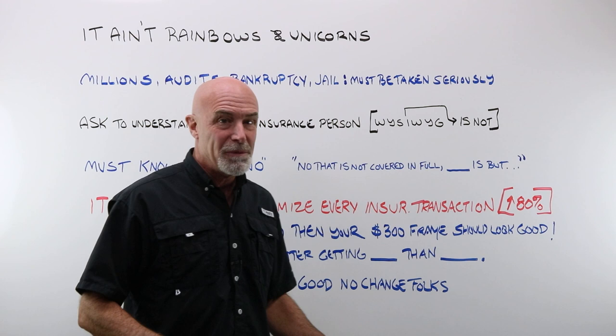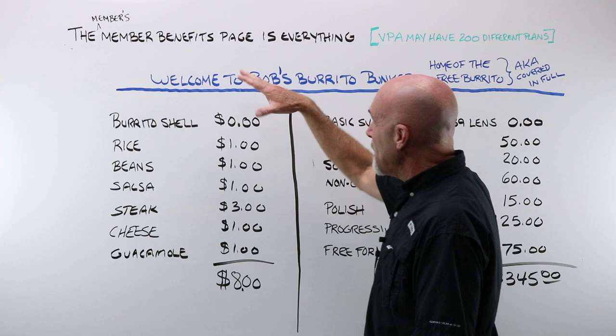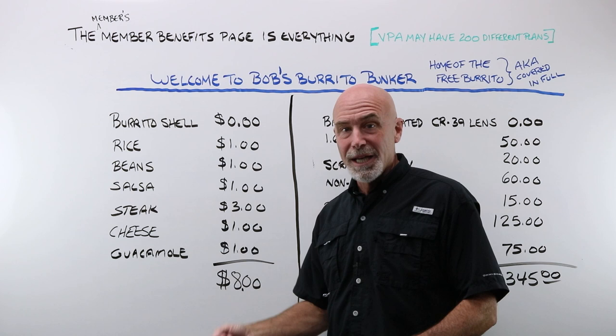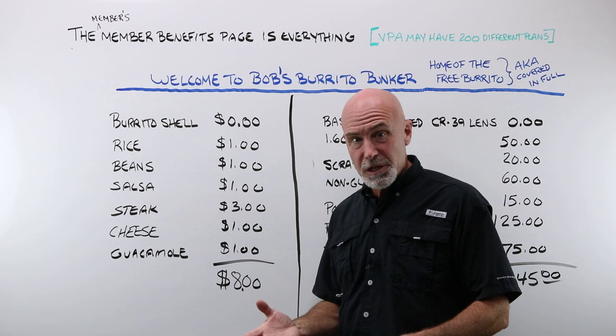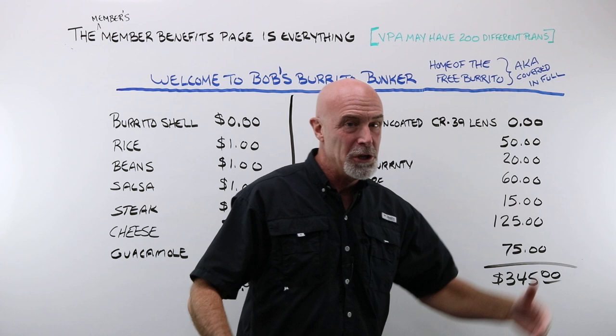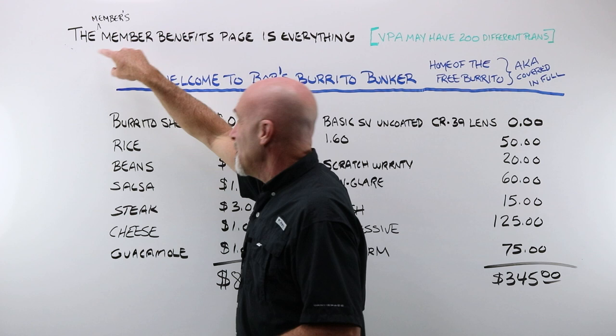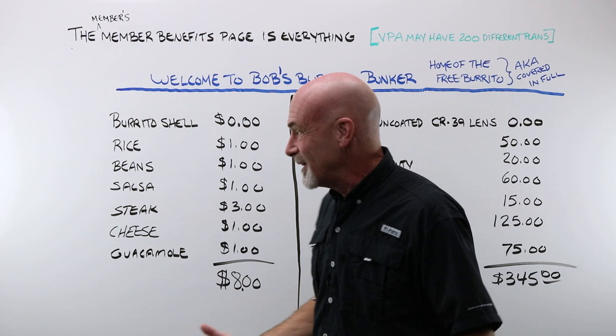The member benefits page is everything. It is your guide on how to build a pair of glasses for your customer with a vision plan. The vision plan of America may have 200 different plans — even within the same company, management may have a different plan than the people out on the factory floor. So it must be the member's specific member benefit page in order to get this priced up correctly. The best way for you to think about this is an a la carte menu, because that is what it is.